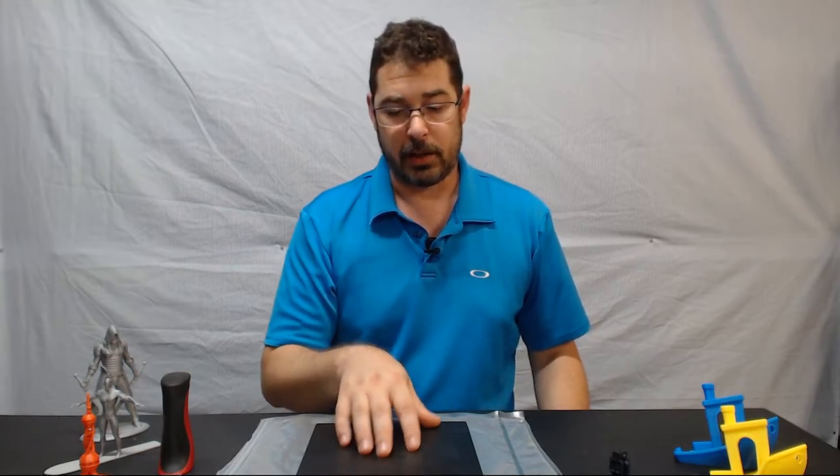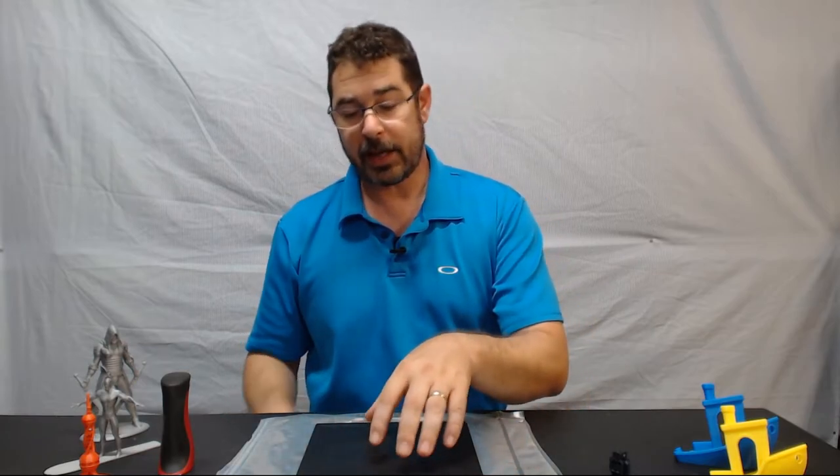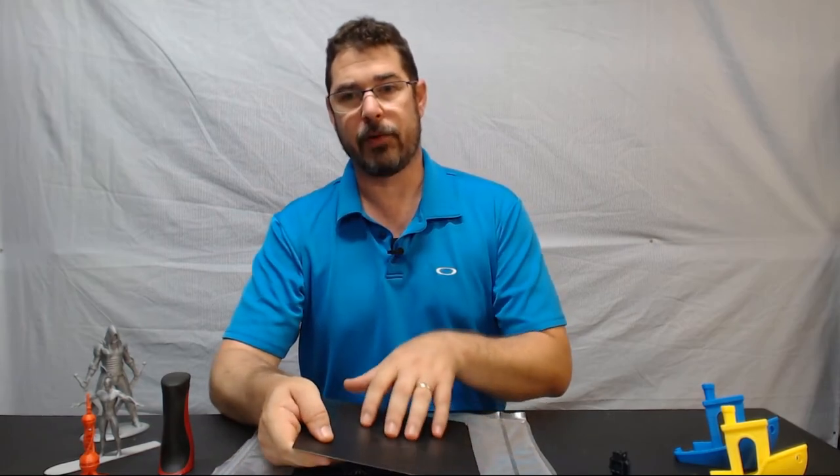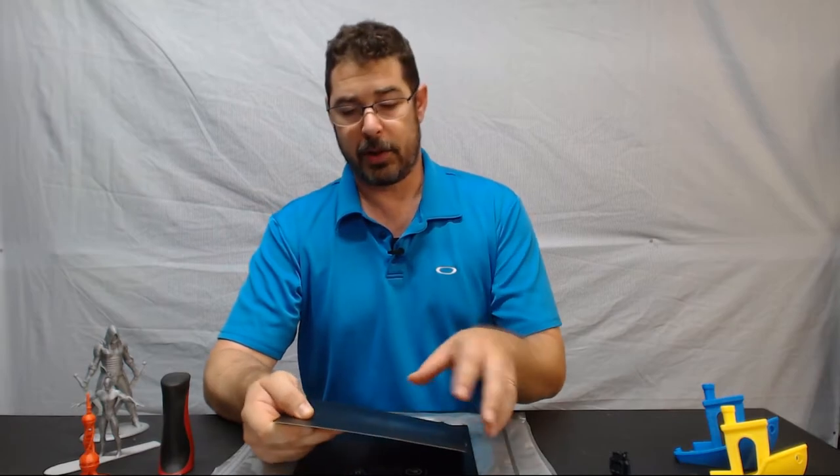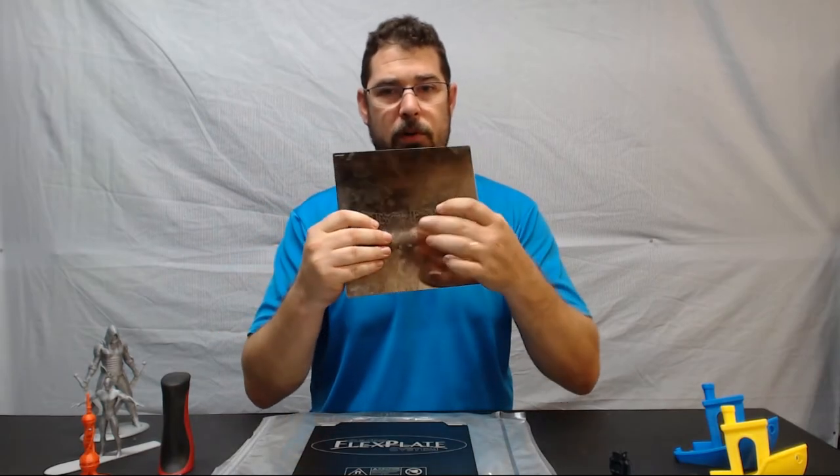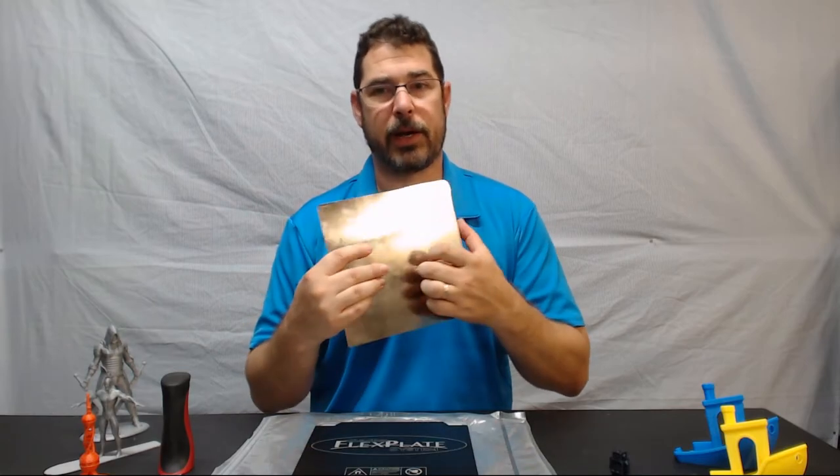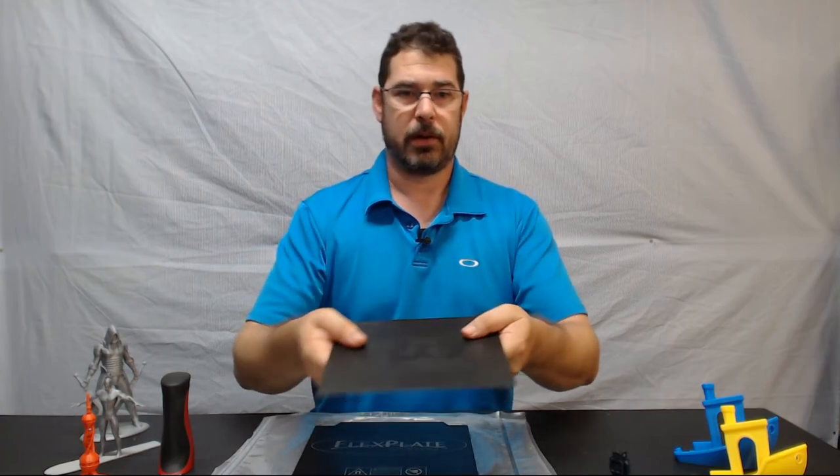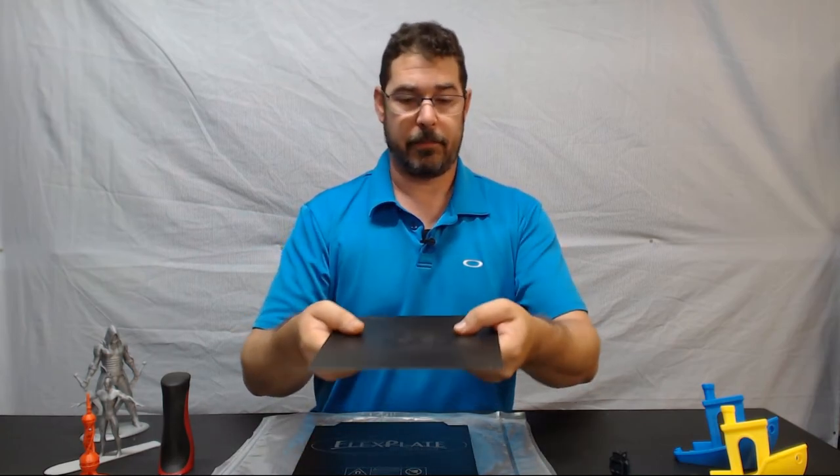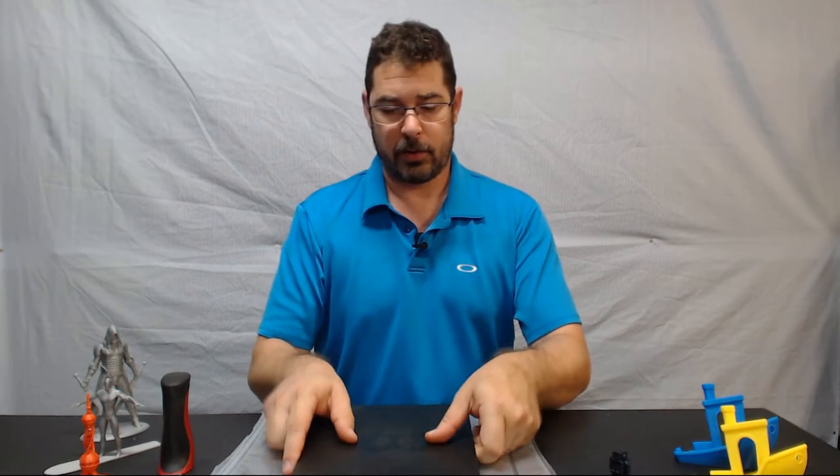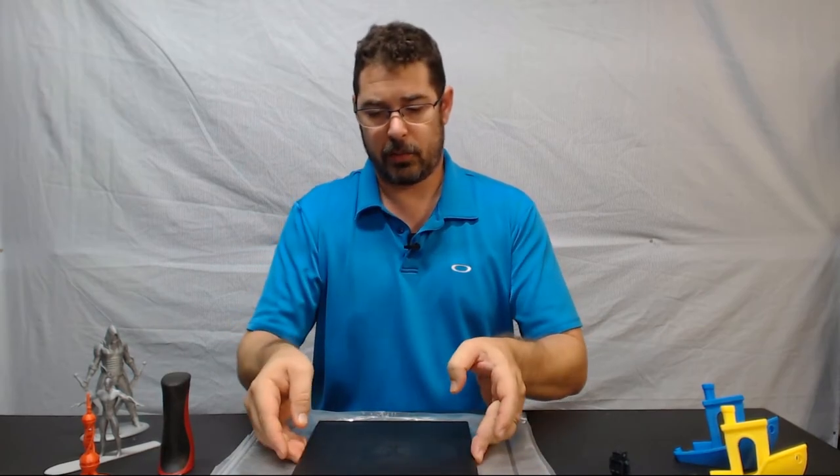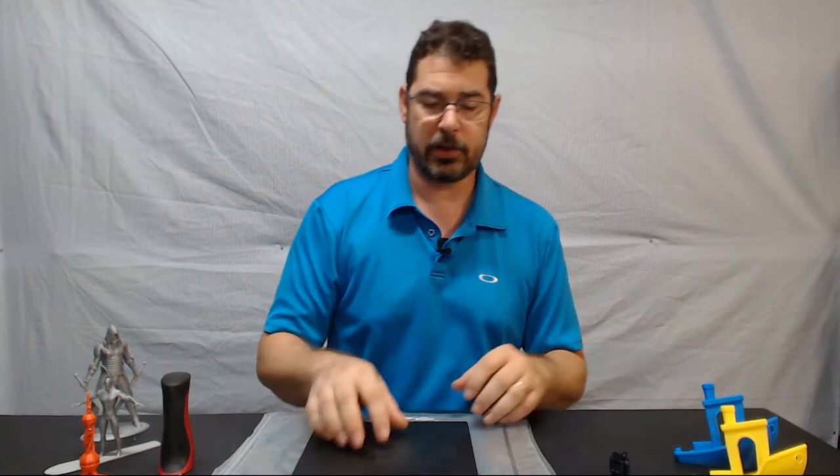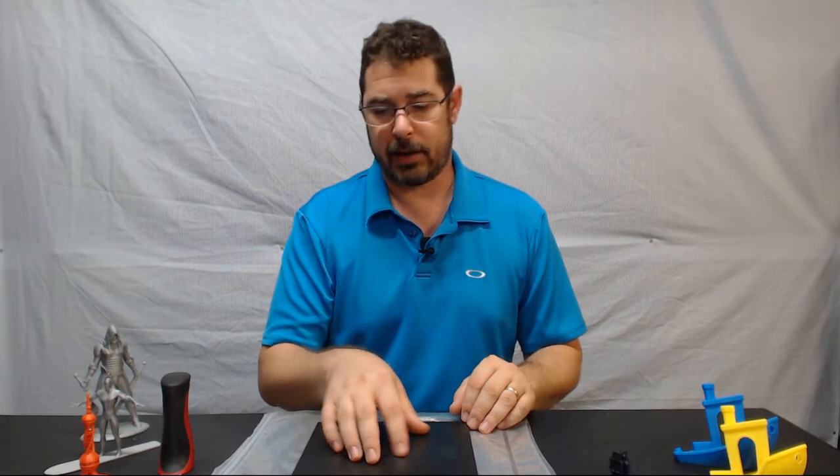One thing that is kind of neat about this, and it's not necessarily an advertised bullet point by BuildTak, is you can purchase more than one flex plate. Although it comes with one with the kit, you can buy additional ones. So if you wanted to run a print, carefully if it's hot, pop off the build plate, stick another one on there, restart your next print while the other one's cooling down and waiting to pop off. Then you can pop it off at your leisure. It is nice to have that option.